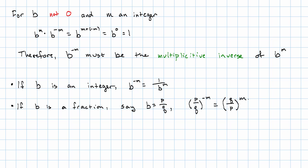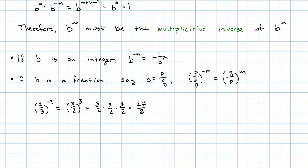Let's see if that works. Let's say we want two thirds to the negative three. I'm claiming that's three halves to the positive three. That's three halves times three halves times three halves, which should be 27 eighths.